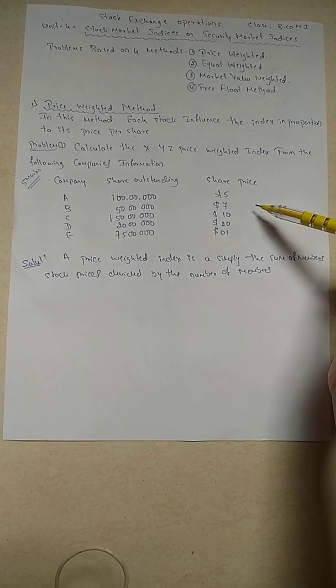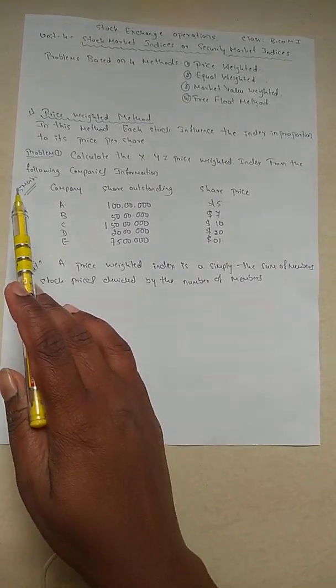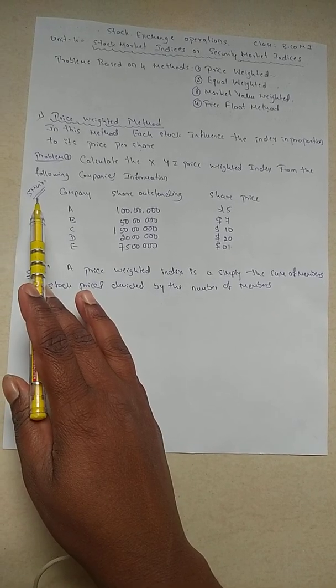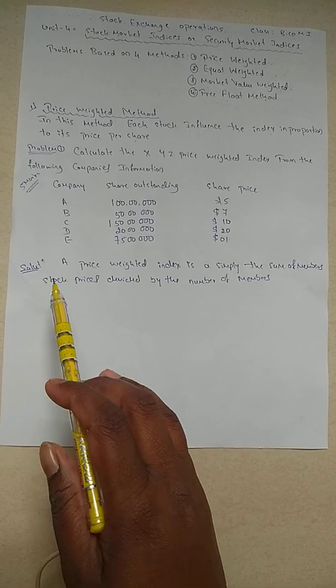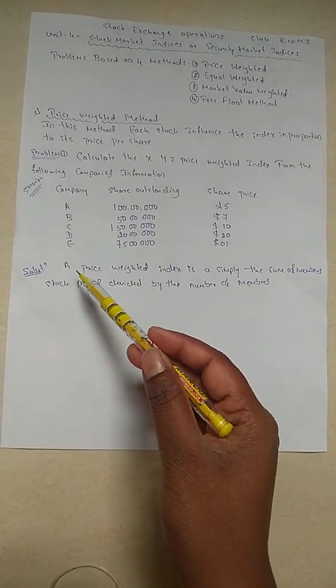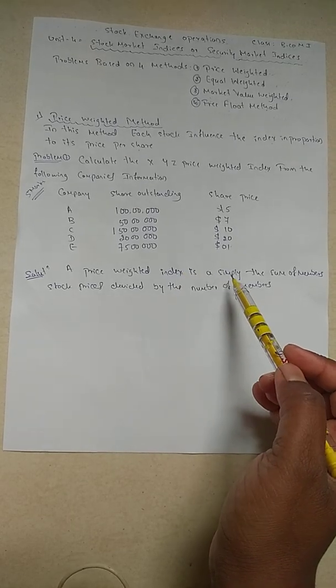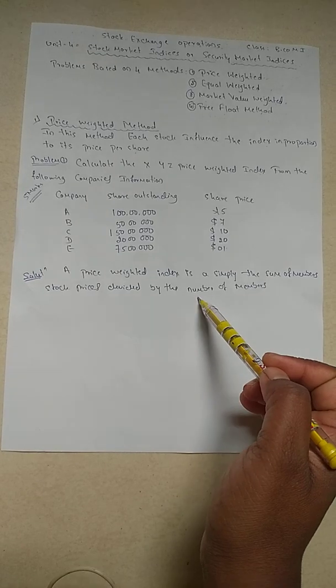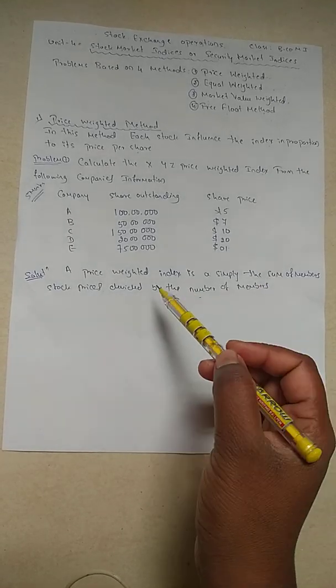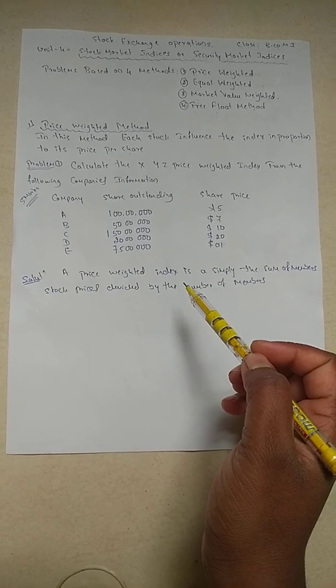So this is our problem. Let's start the solution. As we know this problem is asking for five marks, so it is very simple. A price weighted index is simply the sum of stock prices divided by the number of members. We can say it is a formula given in a statement manner.